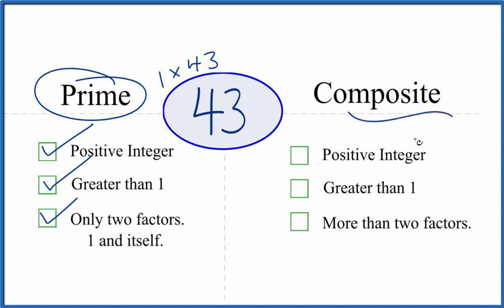But is it a composite number? Because we have a positive integer, it's greater than 1. But are there more than two factors? Well, we said there's only two factors. It's not composite.